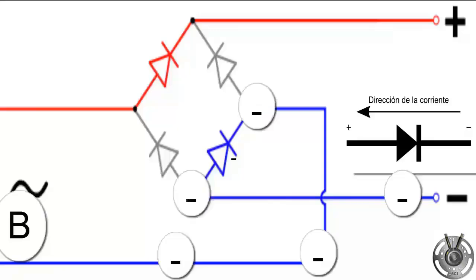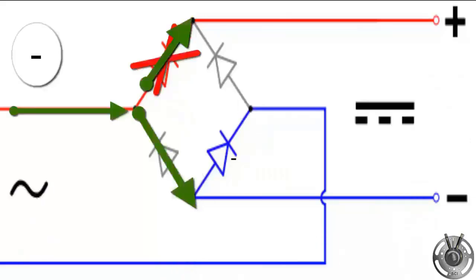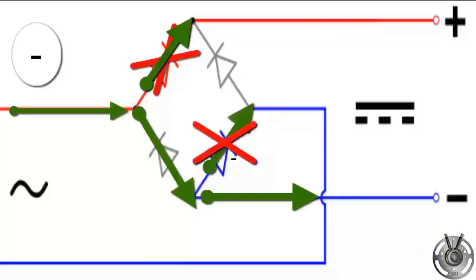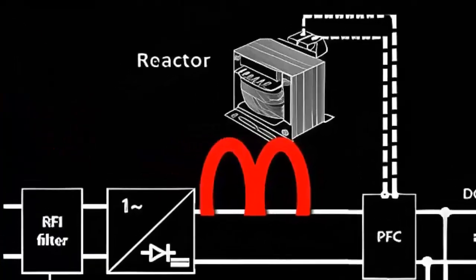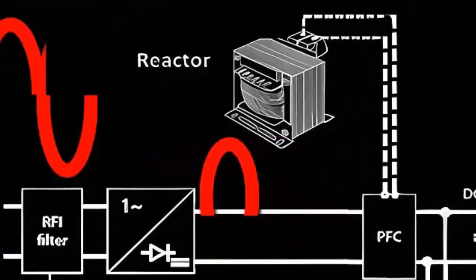These diodes allow current to flow in only one direction, and thanks to the proper configuration within the rectifier bridge, we achieve a current with a single direction. Thus, the current at the output of the rectifier bridge has a voltage of approximately 300 volts of direct current.